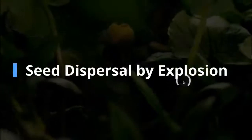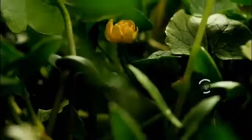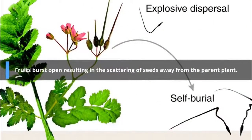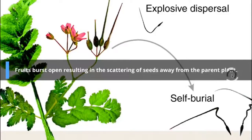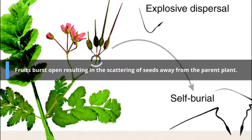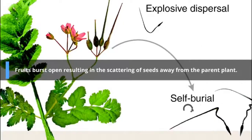Next is seed dispersal by explosion. The walls of the fruits explode and burst open suddenly. When the seeds dry, the walls of the fruits curve and throw out the seeds with a strong force, opening the fruit walls.